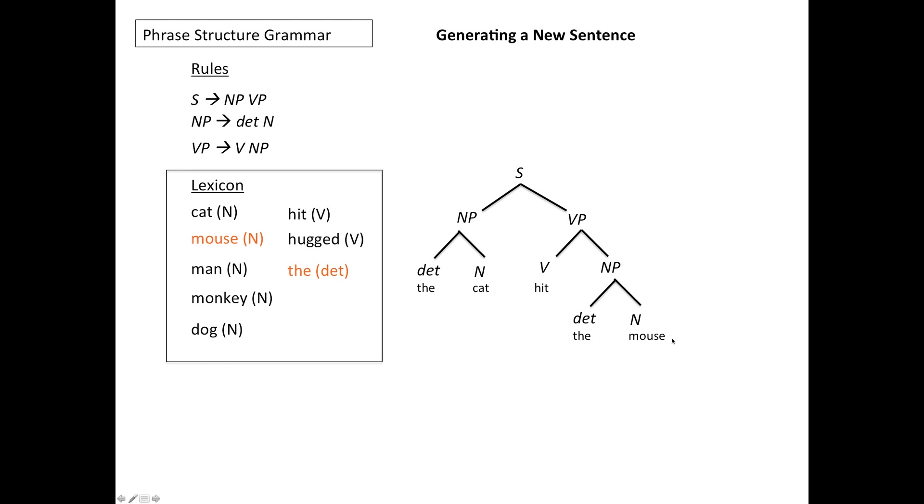Now noun phrase becomes determiner and noun and I choose from a determiner, the, and the noun I choose as mouse. So this is a valid sentence in the language because I followed the rules and wherever I had options I used elements of the lexicon. And my sentence is the cat hit the mouse.